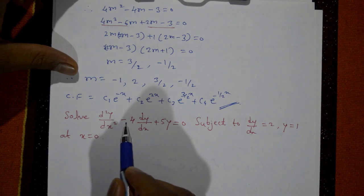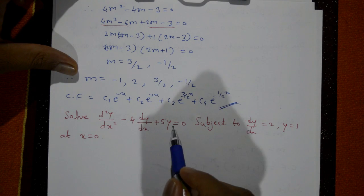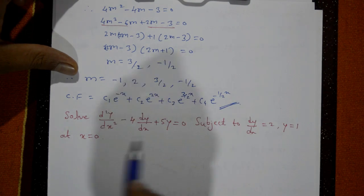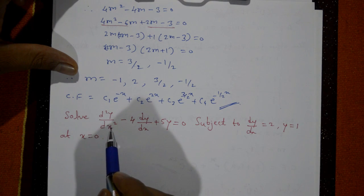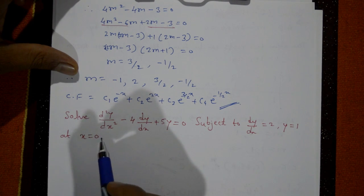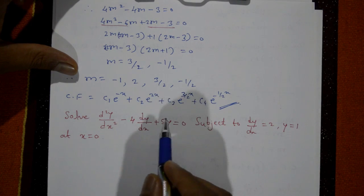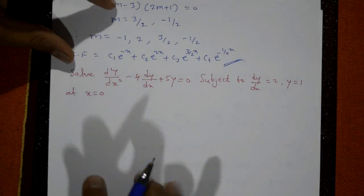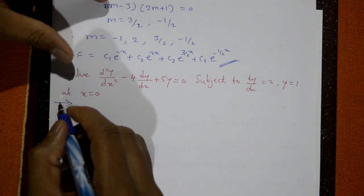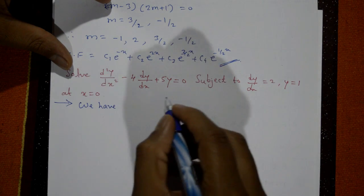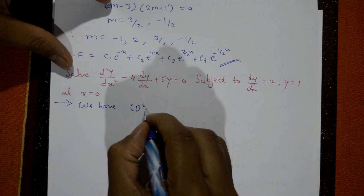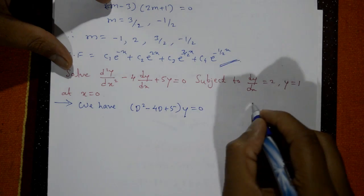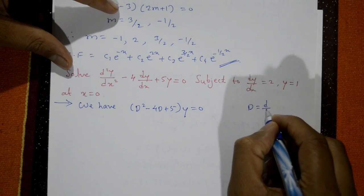Solve the differential equation d²y/dx² - 4 dy/dx + 5y = 0, subject to conditions dy/dx = 2 and y = 1 at x = 0. This is a homogeneous equation with x as the independent variable. Using the conditions we find the solution. Write in operator form: (D² - 4D + 5)y = 0, where D stands for d/dx.